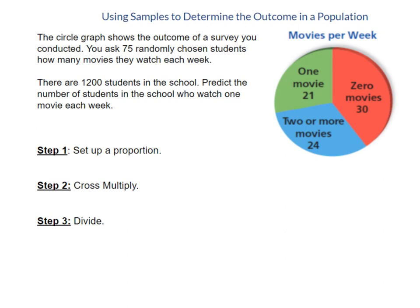In this video, we will talk about how to use a sample to determine the outcome in a population. The first thing we're looking at is this circle graph. It says the circle graph shows the outcome of a survey you conducted.